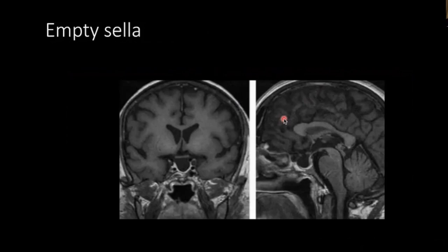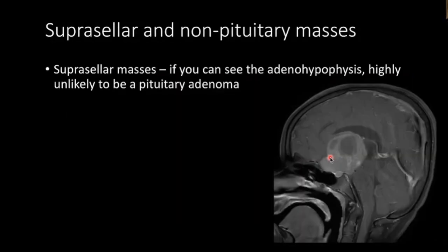Moving from mass lesions toward empty sella syndrome: the sella is enlarged but there is virtually no visible pituitary parenchyma. Now coming to suprasellar non-pituitary masses.